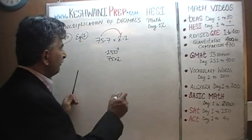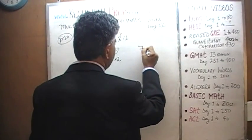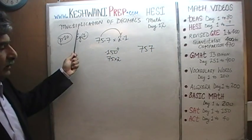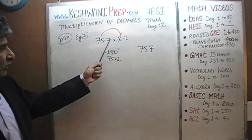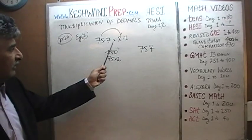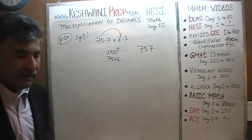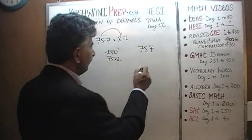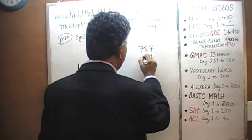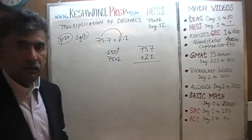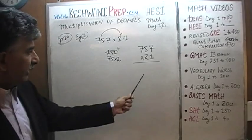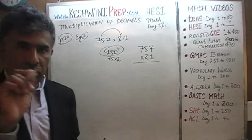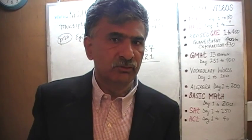Let's do it out. The trick when multiplying numbers involving decimals is to ignore the decimal in the beginning — we'll take care of decimal points at the very end. Pretend it's 757 times 21. When we get the answer at the end, we'll deal with the decimal. Knowing what you're looking for — something over 150 — helps us locate our decimal points.